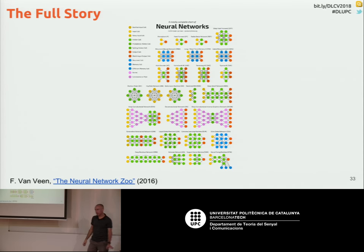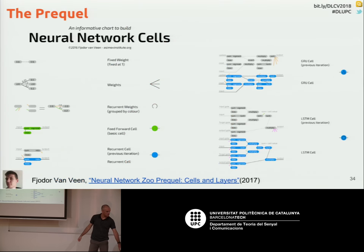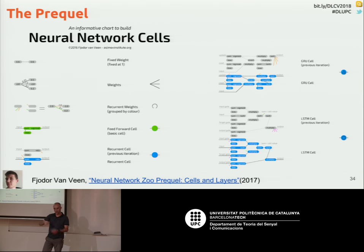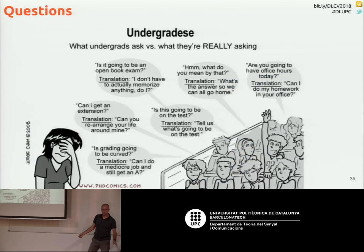That was the overview I wanted to present of words that will come up in the next lectures. If you want to read more, this author has a second blog post called 'The Neural Network Zoo Prequel: Cells and Layers,' which goes deeper into the types of cells and layers that compose these large architectures reviewed today. And that will be it for this first introductory lecture.